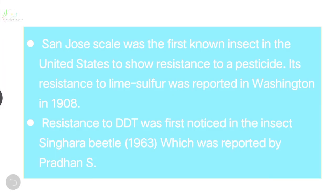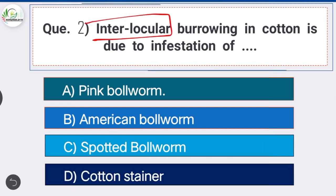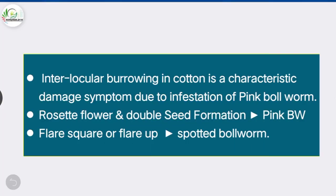Question 2: Interlocular borrowing in cotton is due to the infestation of which pest? Option B is the correct answer: pink bollworm. Interlocular borrowing is a characteristic damage symptom of pink bollworm. Other damage symptoms include rosette flower and double seed formation by pink bollworm, and flare square is a characteristic symptom of spotted bollworm.